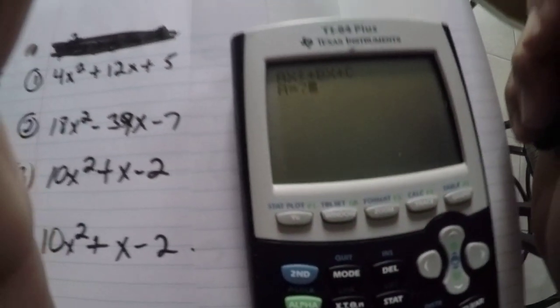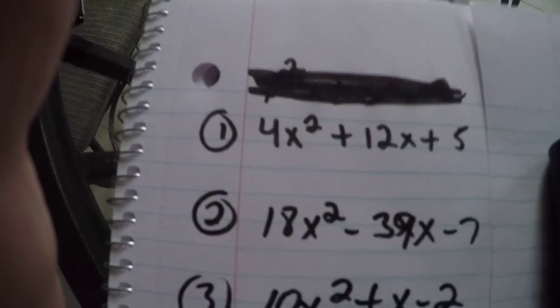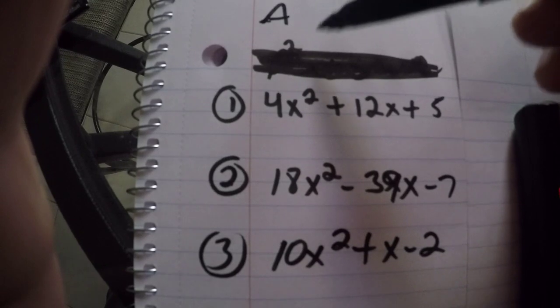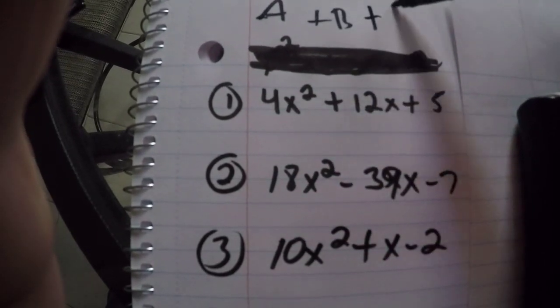Ax squared plus Bx equals C. Okay. Now we come over here. These are the equations. This is A plus B plus C.